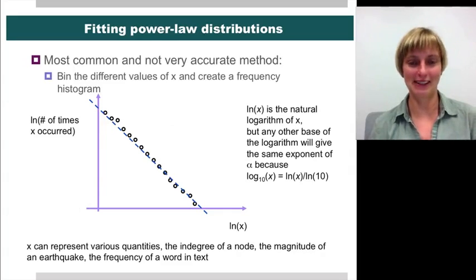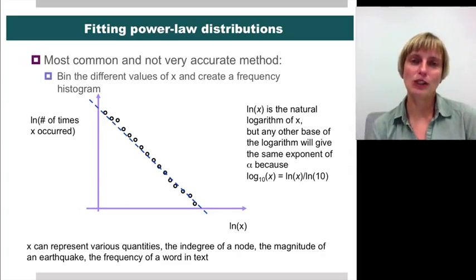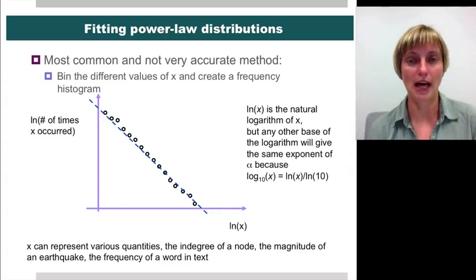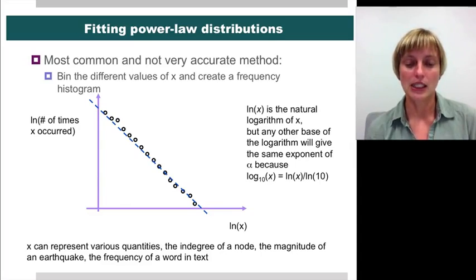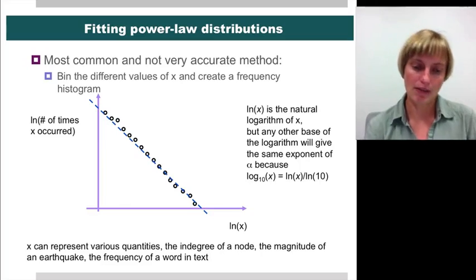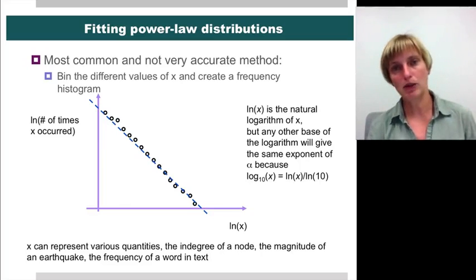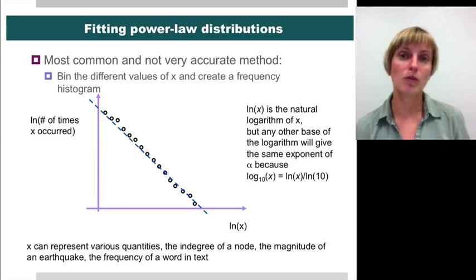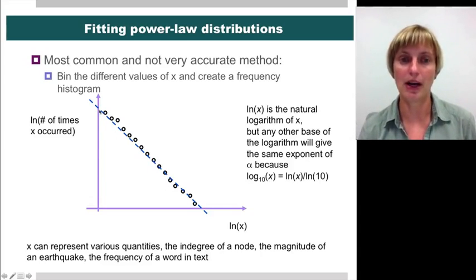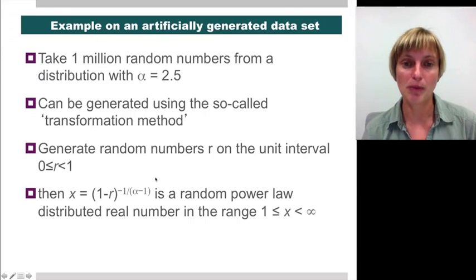Now let's get to the meat of the matter, which is how do you fit power law distributions? How do you know that the degree distribution you measured on your network is actually power law? You start out with a histogram — this many nodes with degree 1, this many nodes with degree 2, and so on. You might think: it's supposed to be a straight line on the log-log plot, so I'm going to plot it and try to fit a line to it. But this is problematic. Let's see what it looks like on an artificially generated data set — I generated many random variables distributed according to an alpha exponent of 2.5, so a fitting method that gets close to 2.5 is a better one.